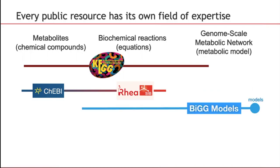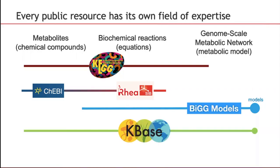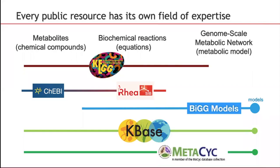Another resource, the BiGG models, is certainly historically the most important and the major contributor to metabolic models. But BiGG models have been expressed in terms of biochemical equations, and it's only very recently that chemical compounds have started to be taken into account. Databases like KBase or MetaPsych are attempts to cover the whole range, but this happens at the cost of some idiosyncratic description of biochemistry.